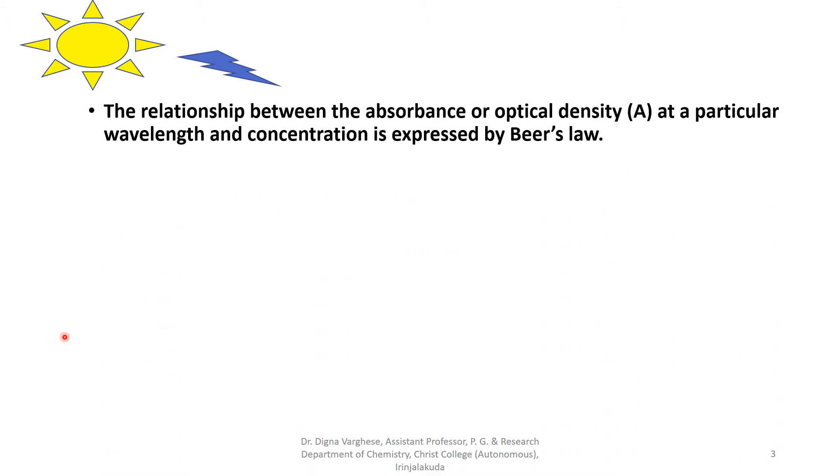Most of the complexes absorb light differently than the metal ions from which they are formed. So the light absorption of metal is different from that of the complex. There is a relationship between the absorbance or optical density A at a particular wavelength and concentration, expressed by Beer's law.